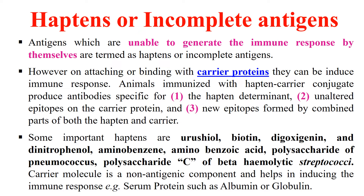How can we make these haptens immunogenic — that is, how can we enable these weak antigens to activate the immune system? Generally, we attach these haptens to certain carrier molecules, which are generally proteins. Once attached to carrier molecules, the immune system starts recognizing these haptens and begins showing an immune response. Some examples of haptens include urushiol, biotin, digoxigenin, dinitrophenol, etc.